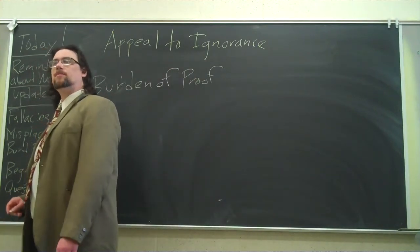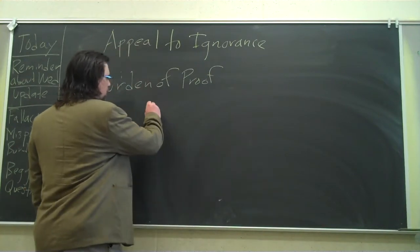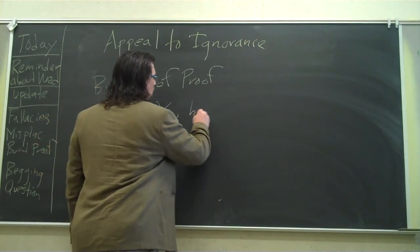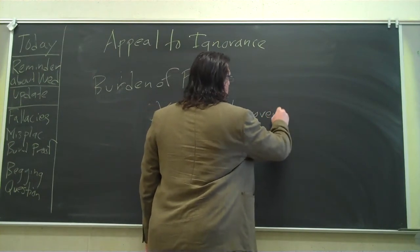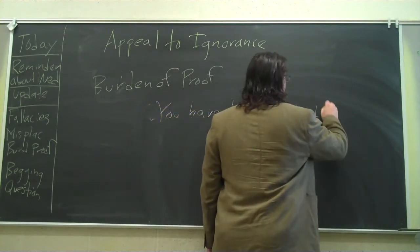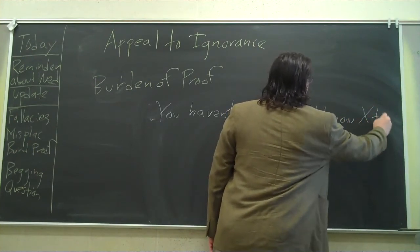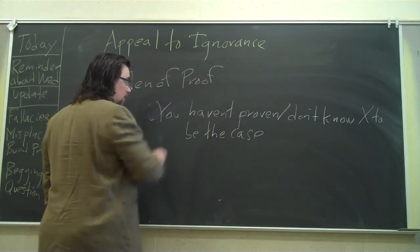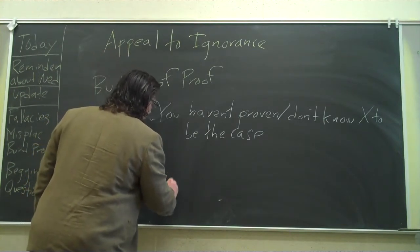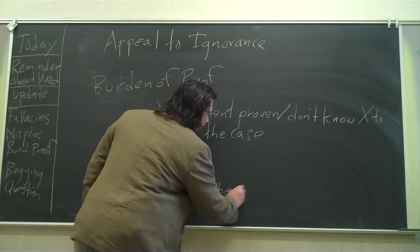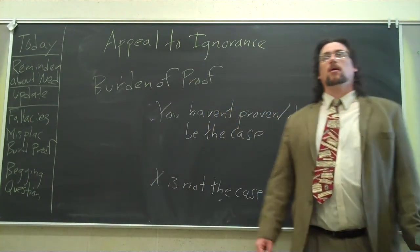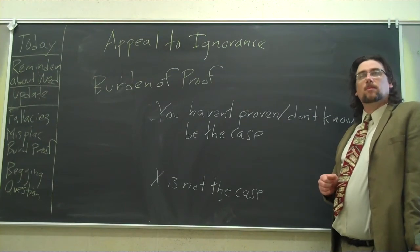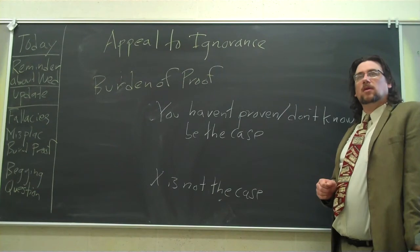Now, where does the argument for ignorance come in? It comes from misplacing the burden of proof. And here's how it works. If you say something like this: If you haven't proven, or you don't know, x to be the case, that's the starting point. Therefore, x is not the case. And you can do this positively, or you can do it negatively.